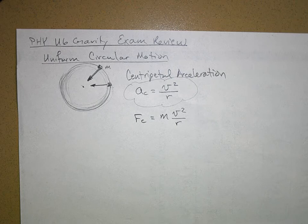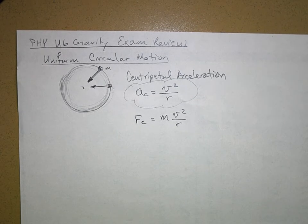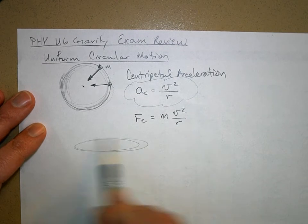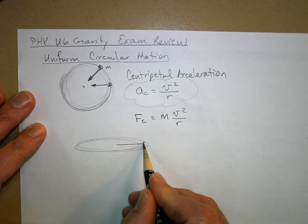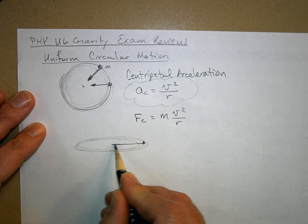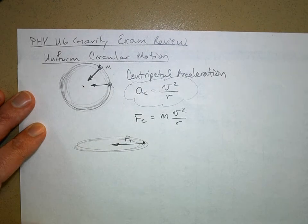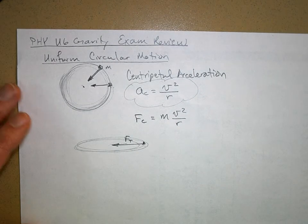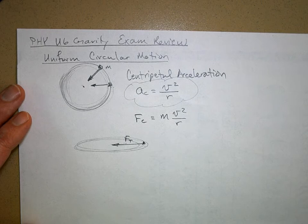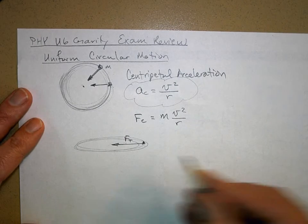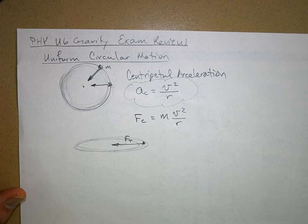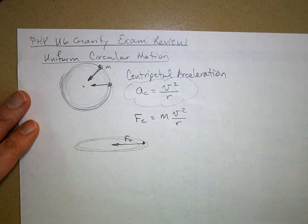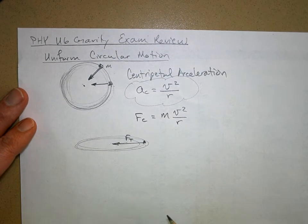There are two kinds of basic problems. First is the whirligig problem, since we did that lab. You have an object with a certain mass and a tension force. In the free body diagram of the object, the tension force is the centripetal force, and you can solve for various things. Study the whirligig lab — I could give you a whirligig-type problem.